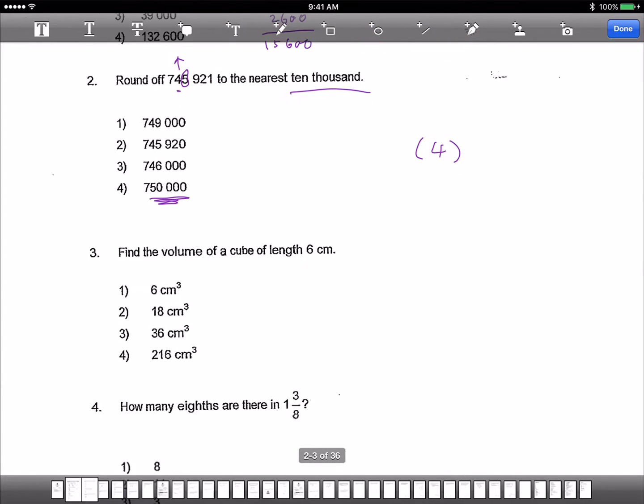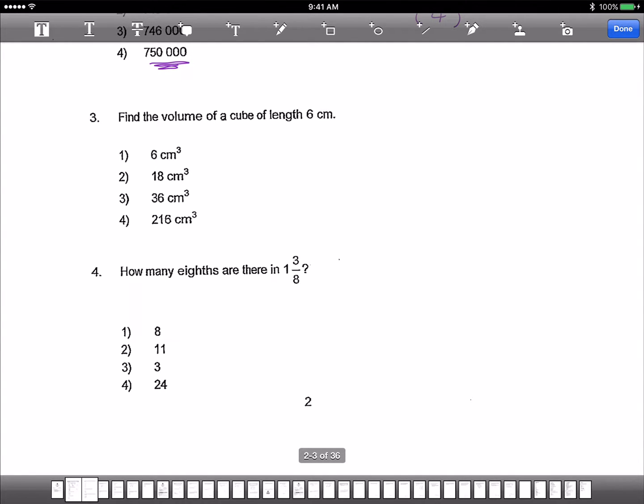Next, find the volume of a cube of length 6 cm. So this is a cube length 6 cm. So it's 6, 6, 6. So 6 cubed is actually 216 cm cubed. So the answer has to be 4.